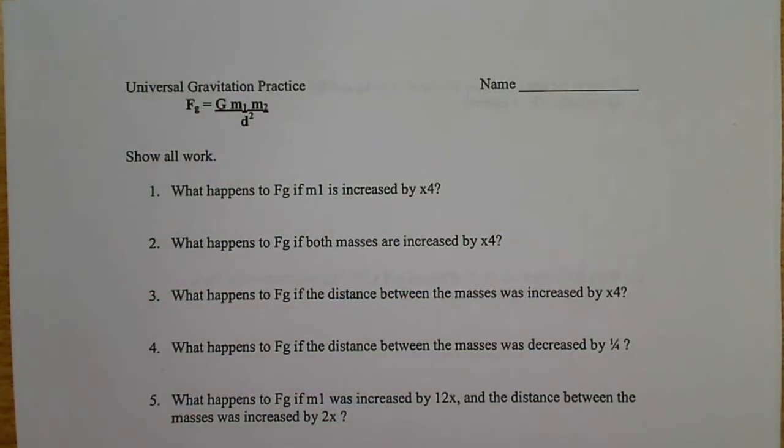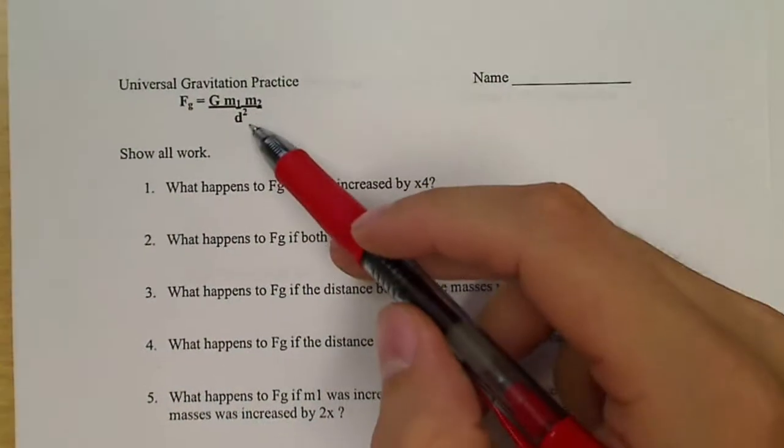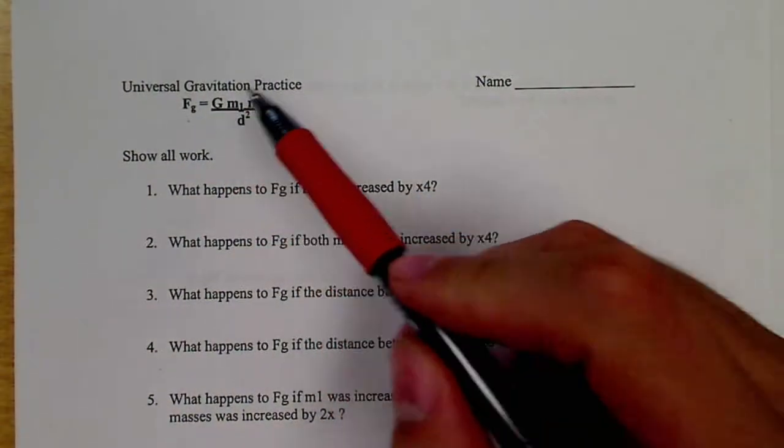Hello physics students, this is Mr. Downing. Let's do some practice with universal gravitation. So here's our equation right here. The force of gravity is equal to this constant G.